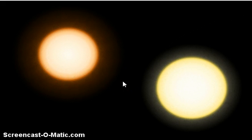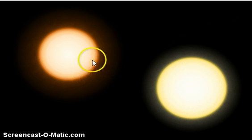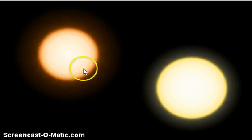It is a star of spectral type K2V, which is also called a K-dwarf or orange dwarf star. It is the stage of stellar evolution that the Sun will move into as the Sun ages and cools.